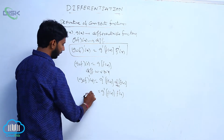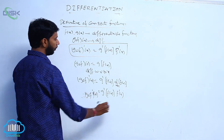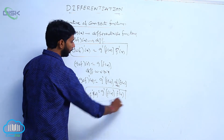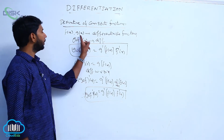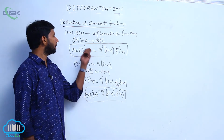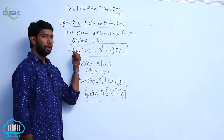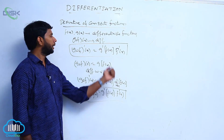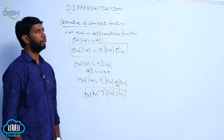That is the derivative of composite functions. Here, f of x and g of x are two differentiable functions and g circle f of x is also differentiable, then g circle f whole dash of x is equal to g dash of f of x into f dash x.